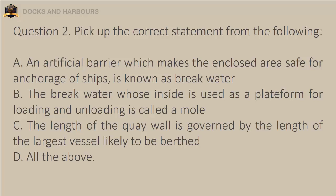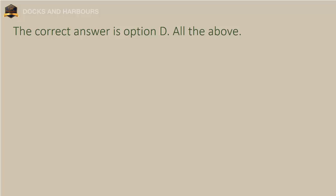Question 2. Pick up the correct statement from the following: a. An artificial barrier which makes the enclosed area safe for anchorage of ships is known as breakwater. b. The breakwater whose inside is used as a platform for loading and unloading is called a mole. c. The length of the quay wall is governed by the length of the largest vessel likely to be berthed. d. All the above. The correct answer is option D: All the above.